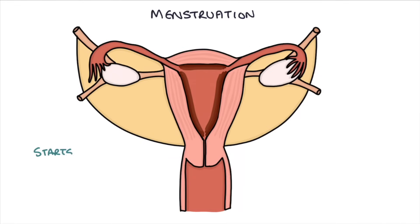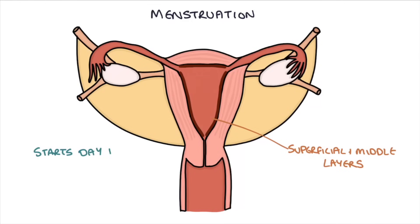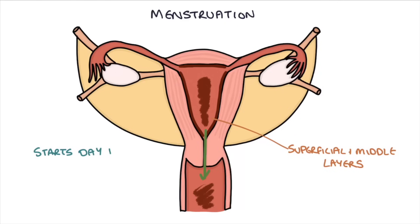The drop in estrogen and progesterone also causes the endometrium to break down and menstruation to occur. Menstruation starts from day one of the cycle — it's where the superficial and middle layers of the endometrium separate from the basal layer, and this tissue is broken down inside the uterus and released through the cervix and the vagina. This causes fluid containing blood to be released from the vagina, and that normally lasts between one and eight days — this is what we call a period.